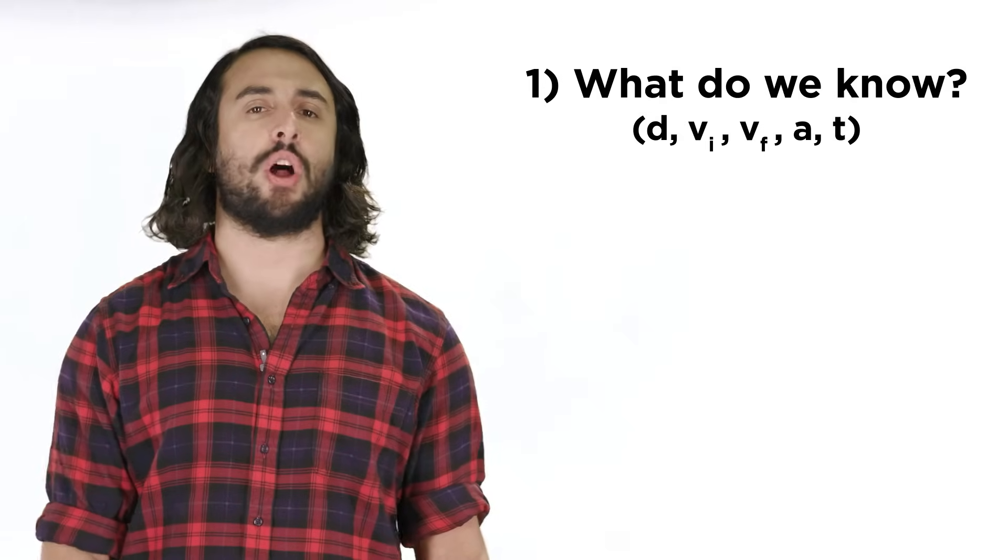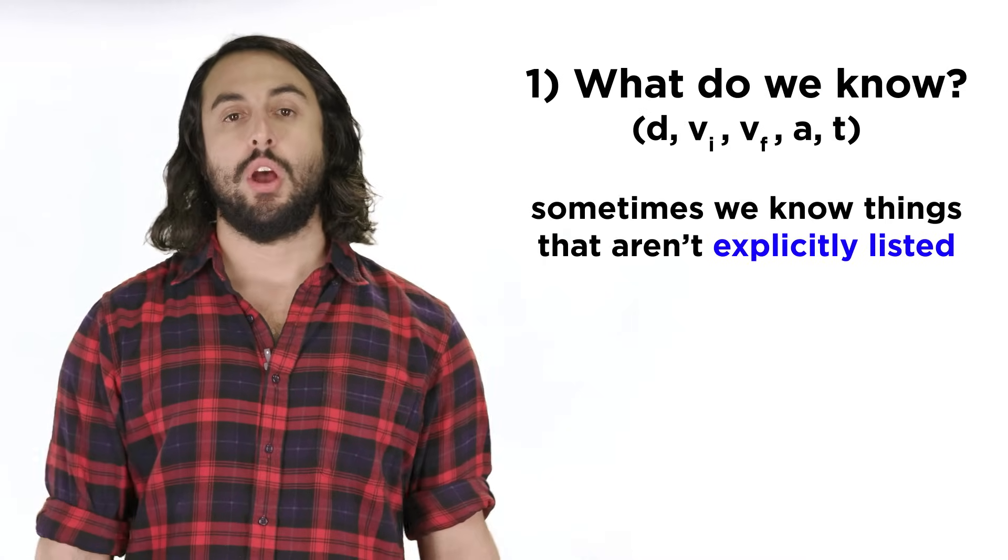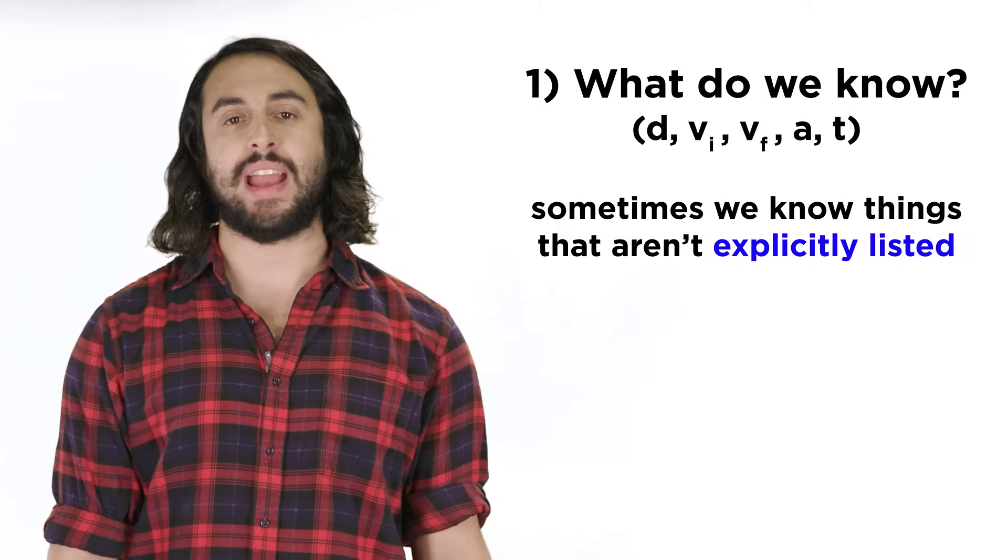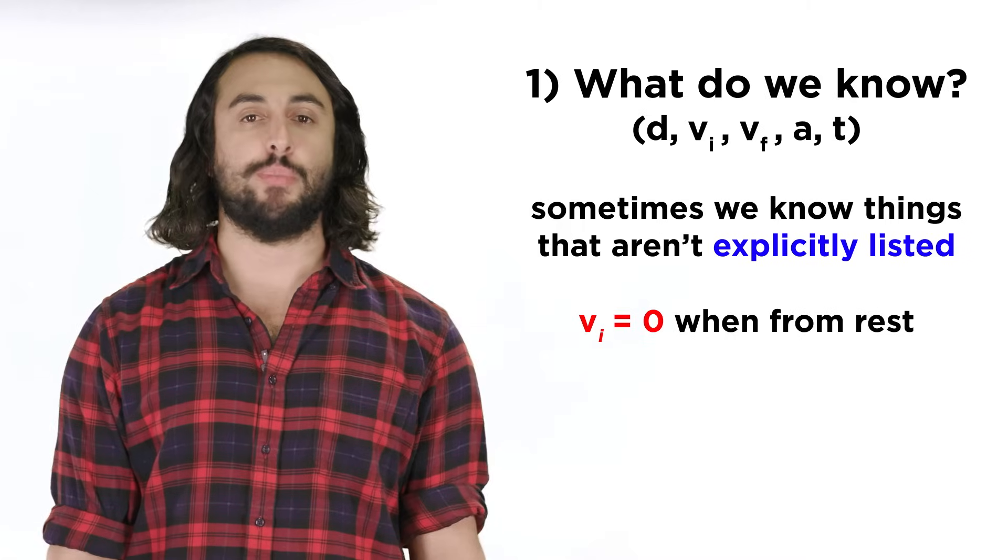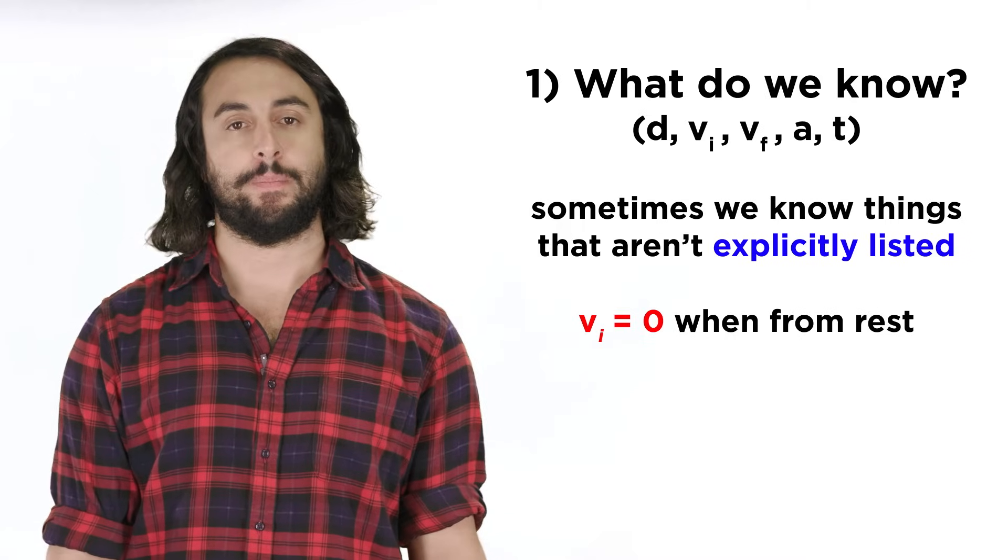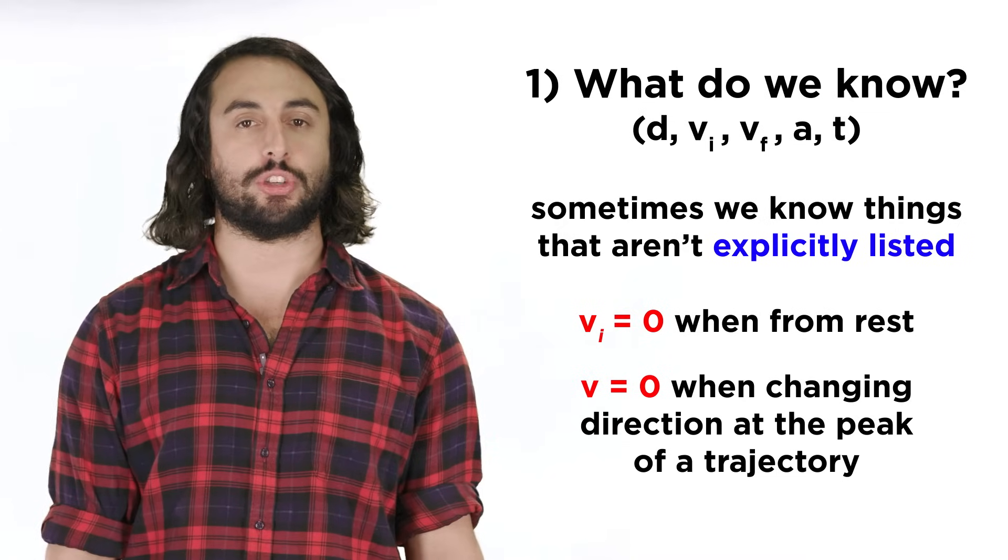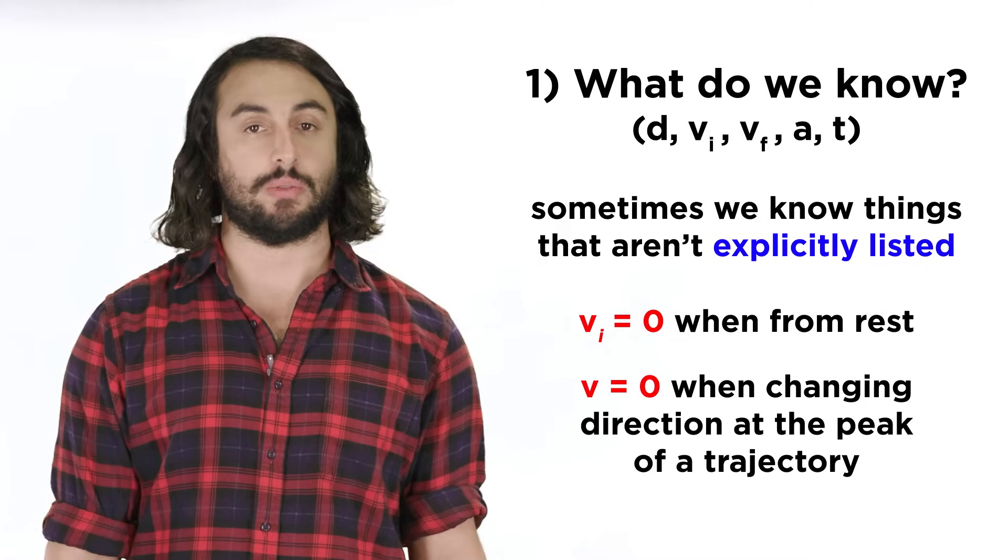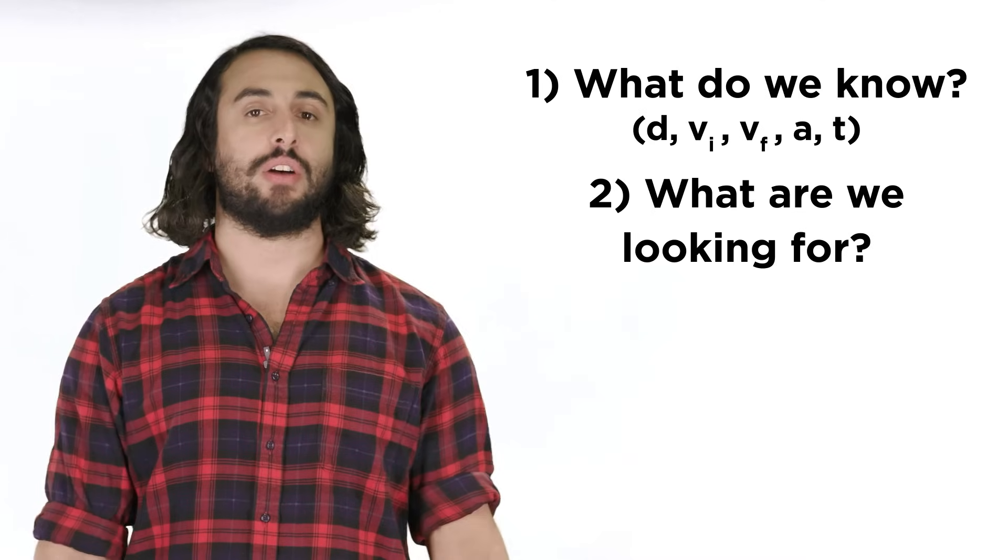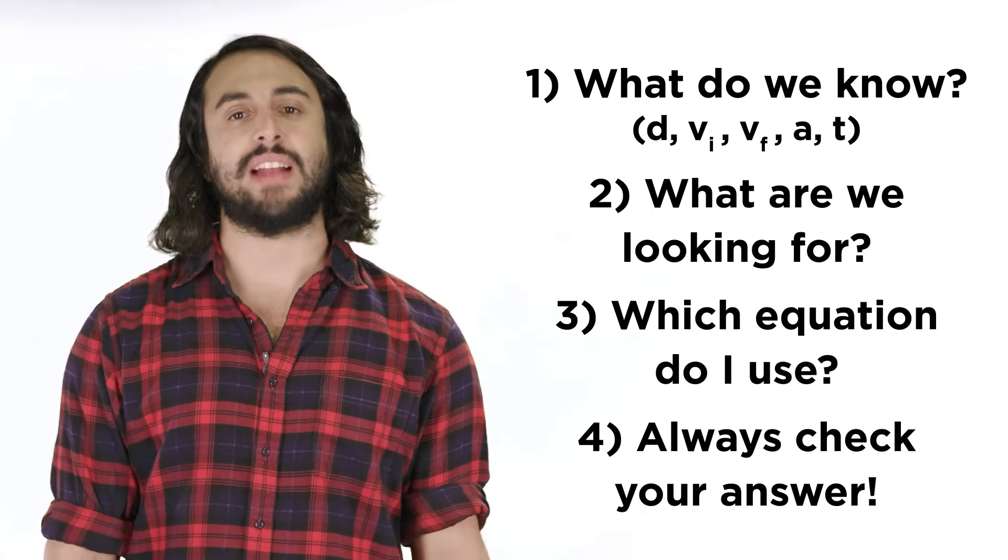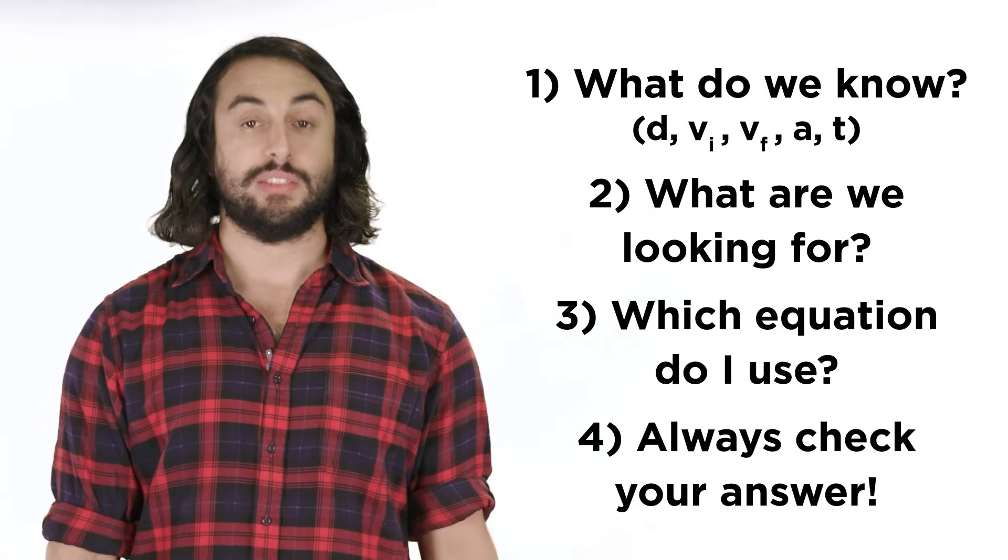So remember that when solving problems of this nature, always ask yourself what information you have. Also remember that sometimes you may have information that is not explicitly listed in the question. If something is moving from rest, the initial velocity is zero. At the moment that an object changes direction with respect to its vertical motion, the velocity is also zero. Make sure you think critically in this regard. Then ask yourself what the question is looking for, and select an equation that will allow you to solve for this unknown value.